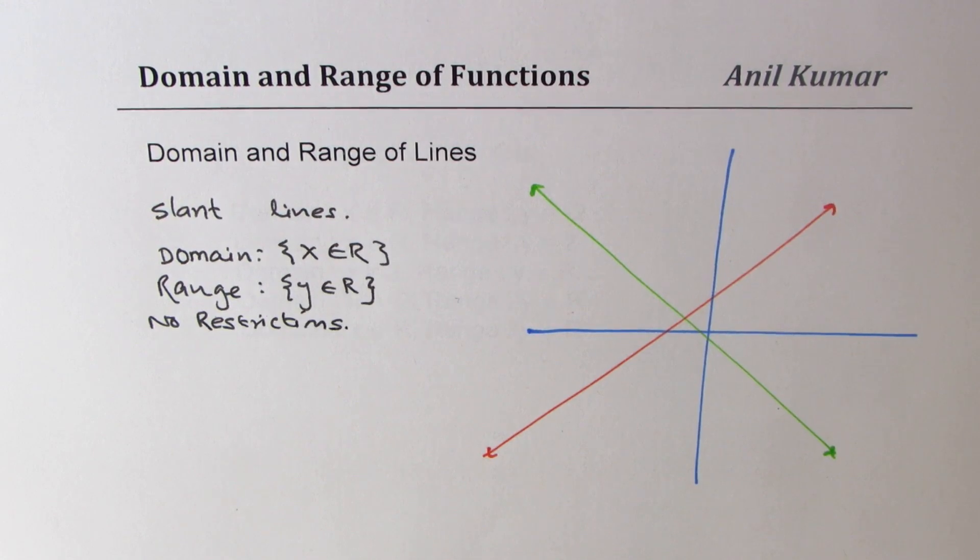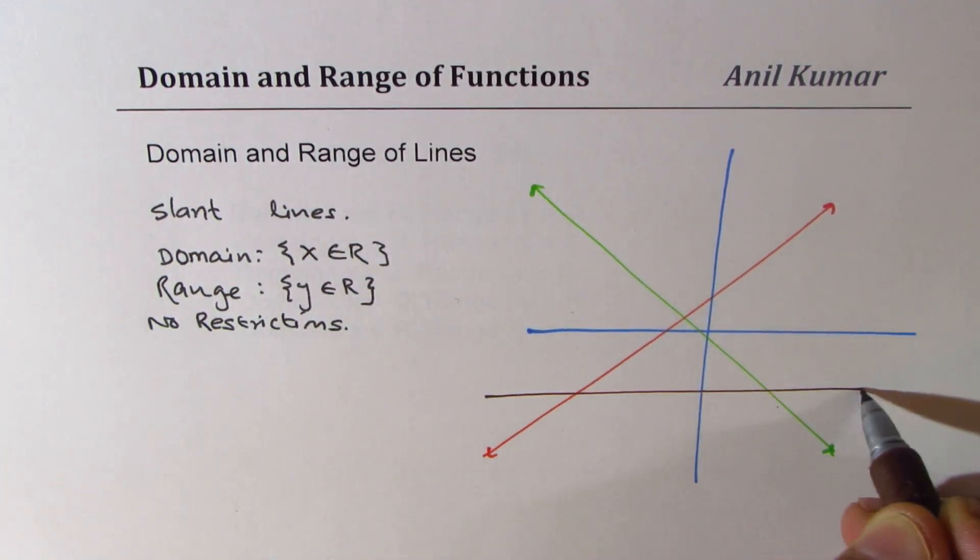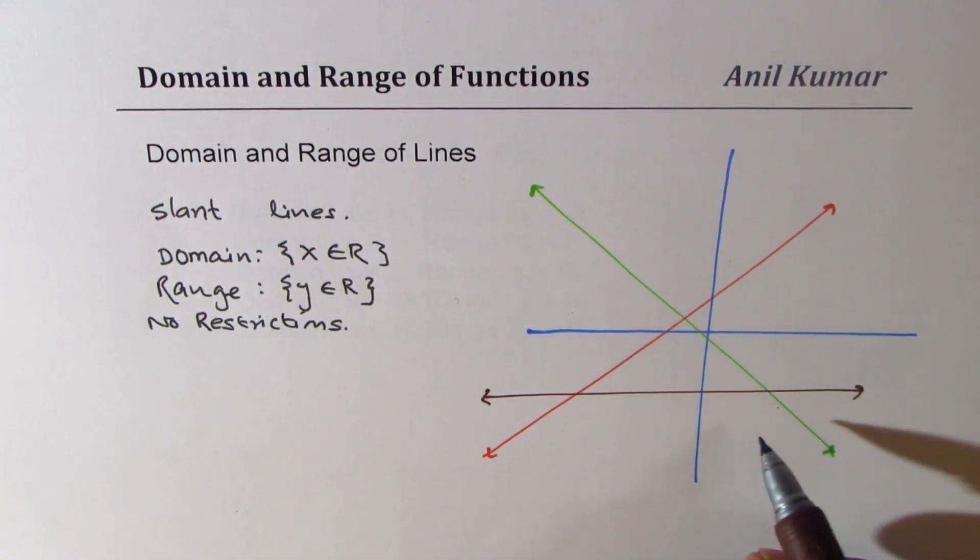So if we have slanting lines, then there are no restrictions. However, we know that lines could be horizontal and lines could be vertical also. Now this is also a straight line which represents a constant function.